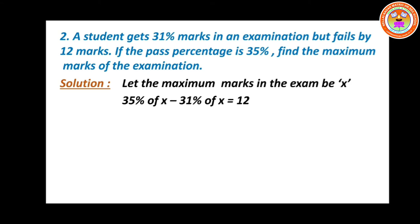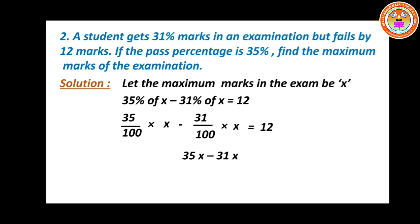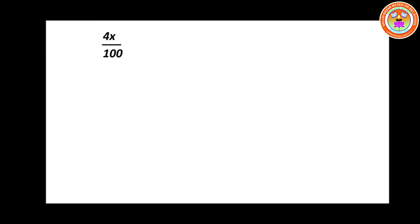So 35 divided by 100 into x minus 31 divided by 100 into x equals 12. Since the denominator is the same, you can write 35x minus 31x divided by 100 equals 12. So 35 minus 31 gives 4x divided by 100 equals 12. So x equals 12 into 100 divided by 4. You can cancel 4 and 12 — 4 threes are 12 — so x equals 3 into 100, which is 300. Therefore maximum mark is 300.